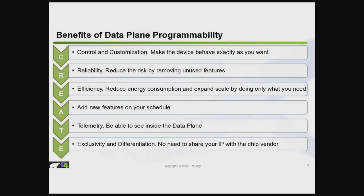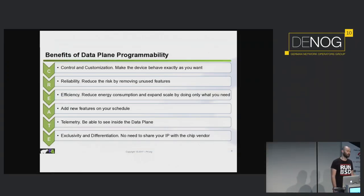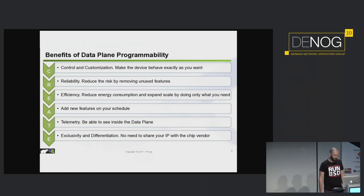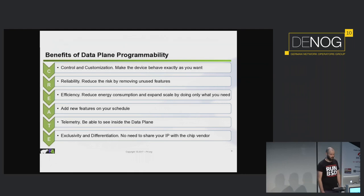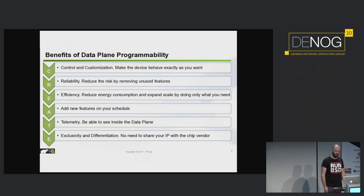The benefits of P4: you get control and customization, reliability — you reduce risk by only using the things you need. Efficiency probably doesn't apply to many people, but if you have 10,000 or 20,000 switches, saving a few watts adds up. You can add new features on your own schedule — be nice not to have to wait for vendors when you could implement your own VXLAN or your own artisanal label stack. Telemetry, telemetry, telemetry — everyone loves telemetry, and P4 gets you into the data plane and gives you a lot of it. You could also differentiate yourself by having a really nice, reliable implementation of whatever protocol you like, without having to share it with anyone else.